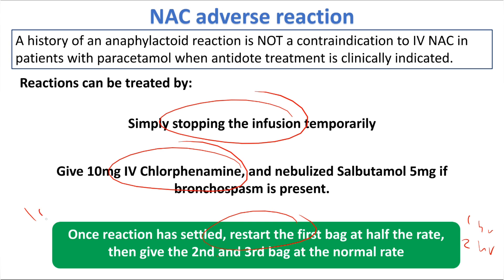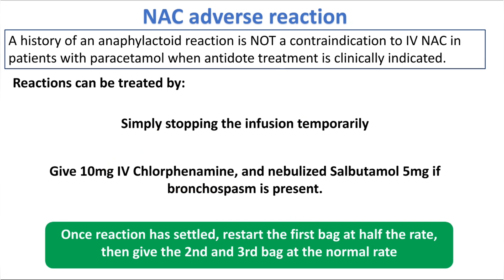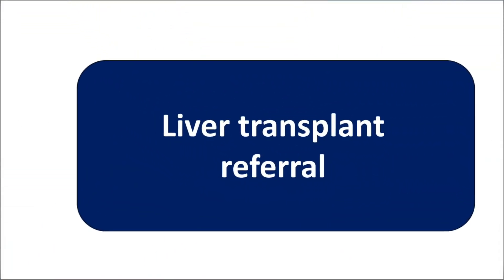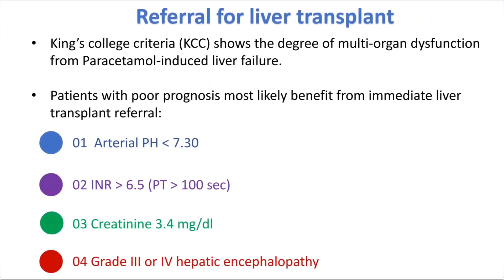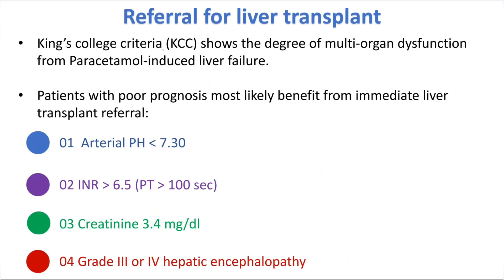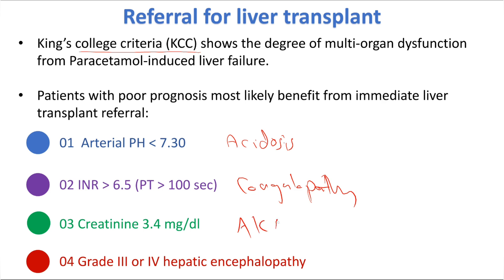There is no role for hydrocortisone or steroids in anaphylactoid reactions to N-acetylcysteine. According to the King's College criteria, patients should be referred to a liver transplant unit if they have: acidosis, coagulopathy, or hepatic encephalopathy grade three or four.